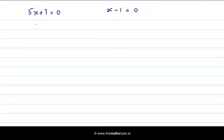If 5x plus 3 is equal to 0, then 5x is equal to minus 3. So x is equal to minus 3 over 5. And we've found the solution which we got earlier on.